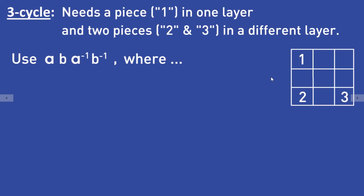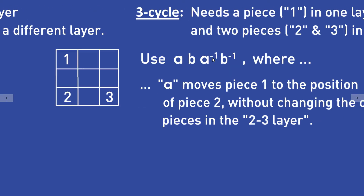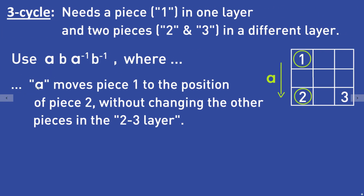We will now use a commutator and I will explain how algorithms A and B have to look. Algorithm A is the algorithm that places piece 1 to the position of piece 2 without changing the other pieces in the layer where piece 2 and piece 3 are located.